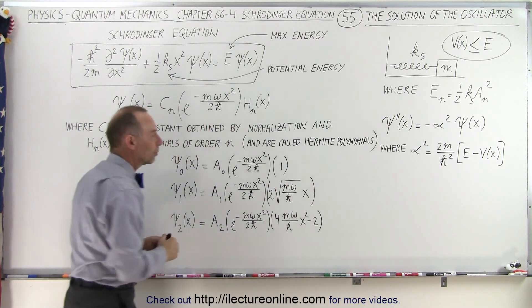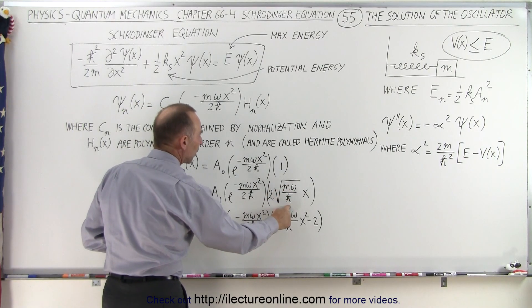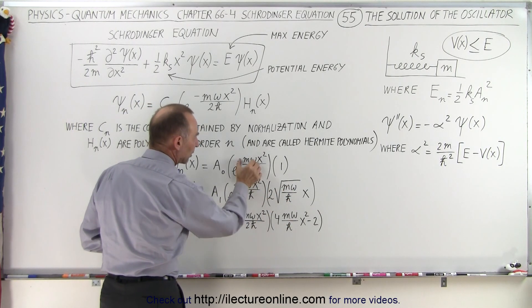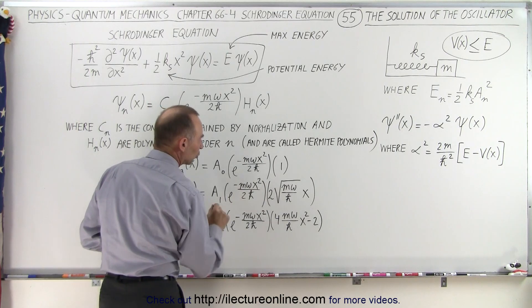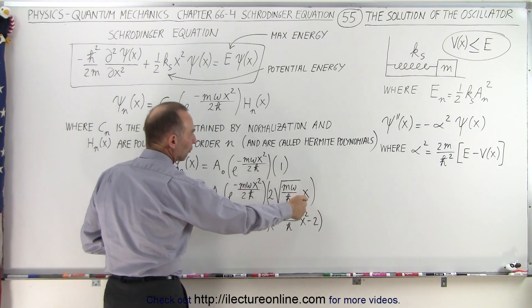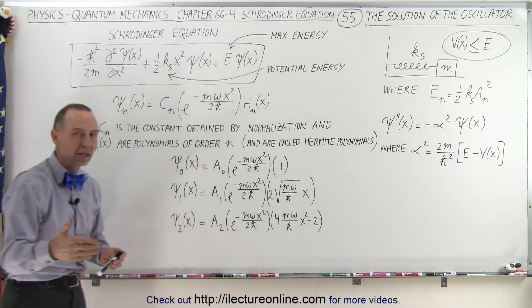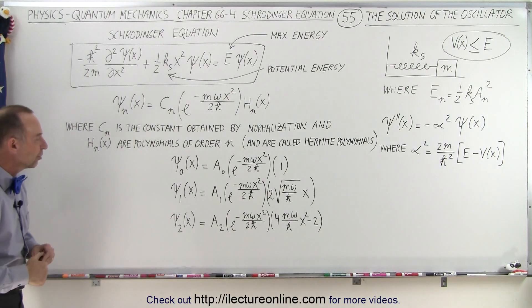It depends what quantum state you're in. Notice we have m omega over h bar appearing in both portions of the solution. Here it's a function of minus x squared, and here it's a function of the order of x - zero order, first order, second order, and so forth, as you get higher and higher quantum states of the wave function.